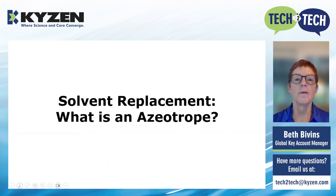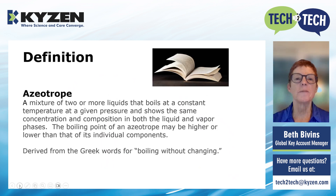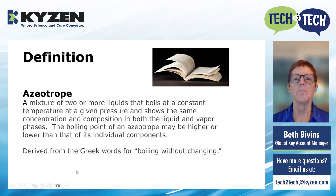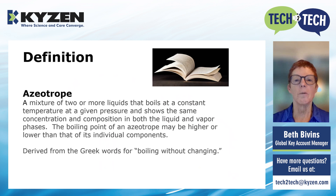Today in our solvent replacement series, we are going to discuss azeotropes — what they are and why they're important. Azeotropes are one of my very favorite things in chemistry because they're unique mixtures of liquids that have a constant boiling point. The general definition is: a mixture of two or more liquids that boils at a constant temperature at a given pressure and shows the same concentration and composition in both the liquid and vapor phases. The boiling point of an azeotrope could be higher or lower than that of its individual components, and it comes from the Greek words meaning 'boiling without changing.' Each blend of solvents is a unique ratio of the two, and each one has its own composition.